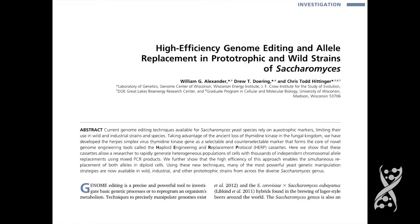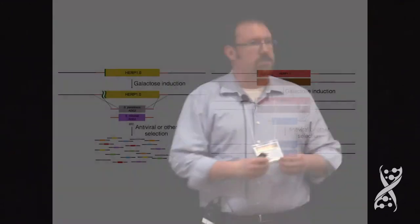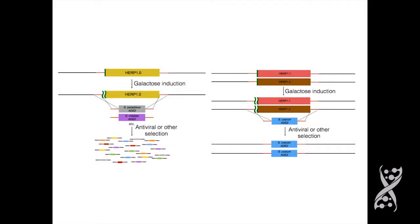This is all documented and published in Genetics in November 2014. A couple of applications include pool transformations, where you can use this technique to generate populations of cells that vary at a single locus of your choice by transforming with pools of PCR products. You can also manipulate both loci of either chromosome of a diploid simultaneously with one transformation.